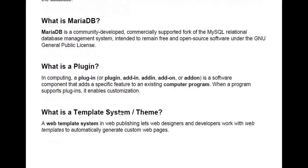What is a template system or theme? In WordPress, a web template system is used in web publishing to help web designers and developers work with web templates to automatically generate custom web pages. You'll get themes in WordPress that you can import along with full demo content, so you can just change the information to yours — it's basically a pre-built website that you can customize and make your own.